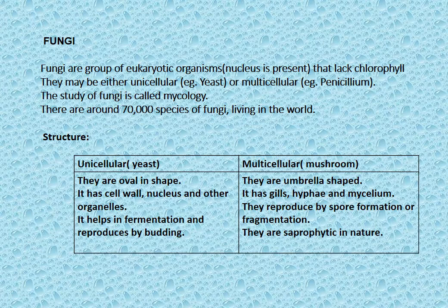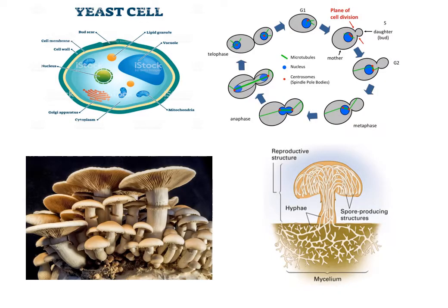Multicellular fungi include mushrooms, which are umbrella-shaped. They have a cap, stalk, and gills. Mushrooms reproduce by spore formation and fragmentation. They are saprophytic in nature, meaning they feed on dead organic matter.